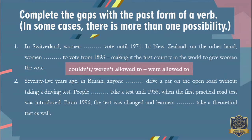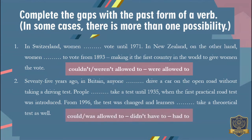Number two: 75 years ago in Britain, anyone could or was allowed to drive a car on the open road without taking a driving test. People didn't have to take a test until 1935, when the first practical route test was introduced. From 1996, the test was changed, and learners had to take a theoretical test as well. So around 75 years ago in Britain, anyone could or was allowed to drive a car.